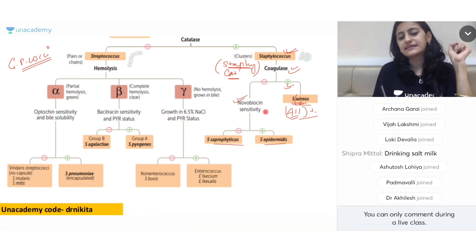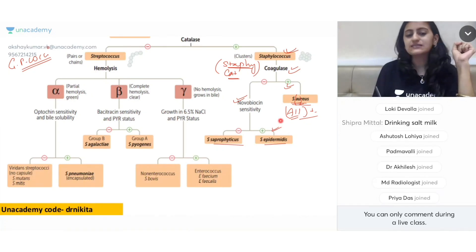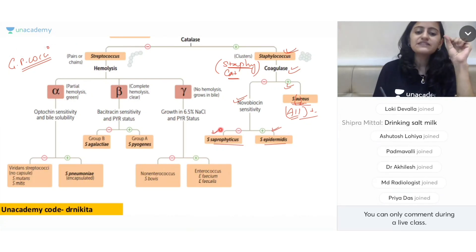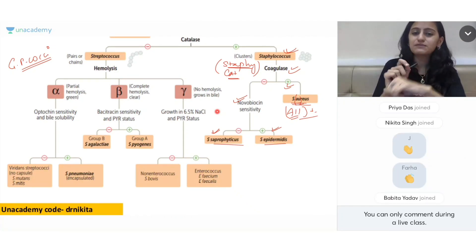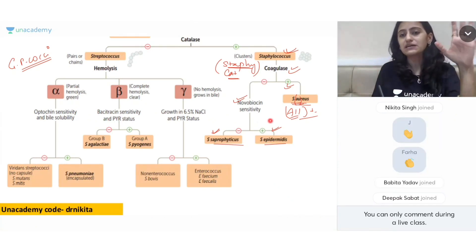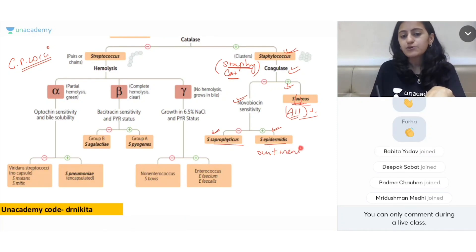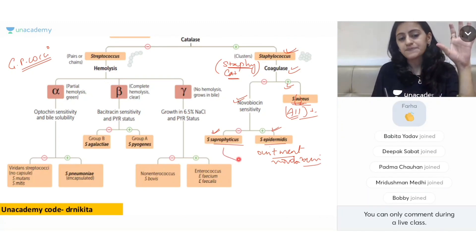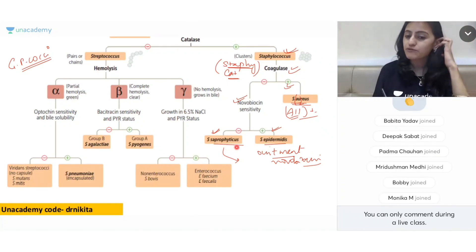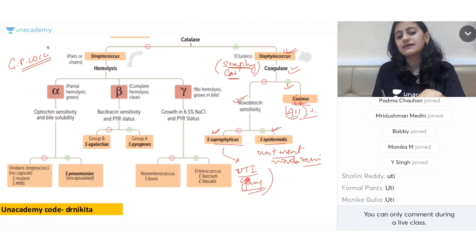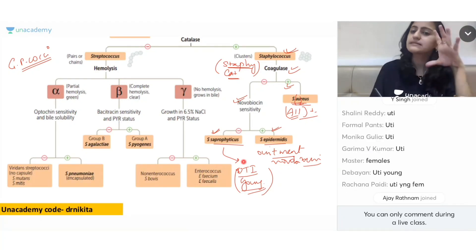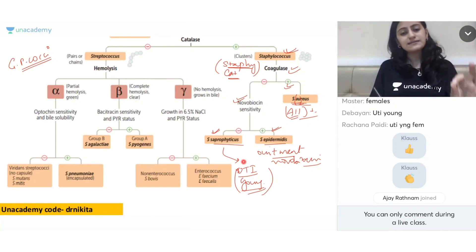Staph epidermidis is novobiocin sensitive and Staph saprophyticus is novobiocin resistant. The trick: novobiocin applied on the skin (epidermis) kills epidermidis — so epidermidis is sensitive and saprophyticus is resistant. Most importantly, Staph saprophyticus causes UTI in young sexually active females — very important to remember.